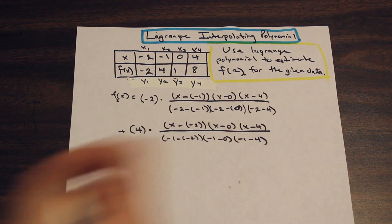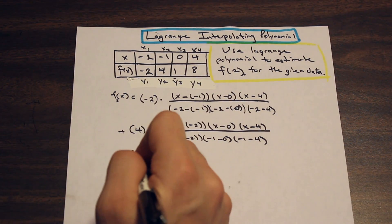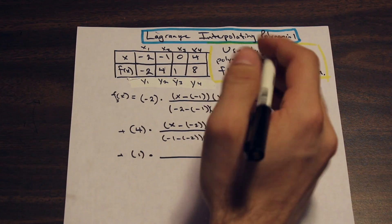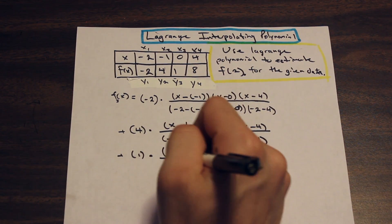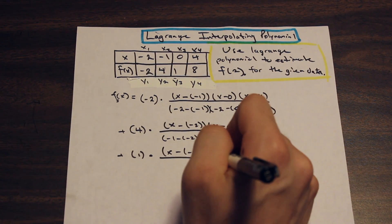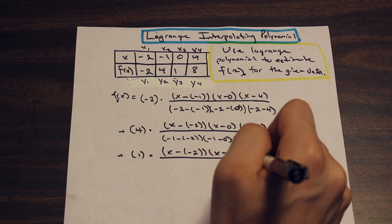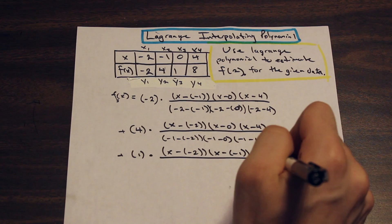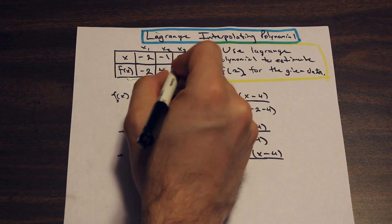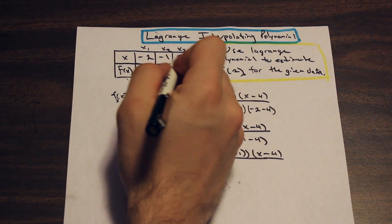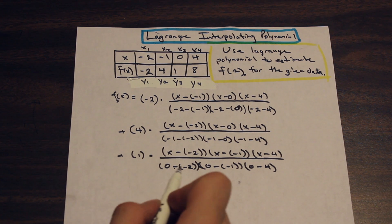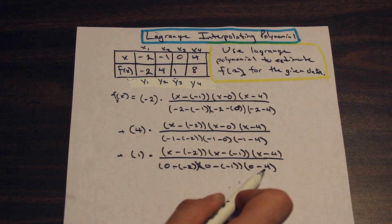Moving on to the y3 term: in the numerator we subtract by all x values that are not x3, so (x − x1)(x − x2)(x − x4). For the denominator, x3 = 0, so we subtract 0 by all x values that are not x3: (0 − x1)(0 − x2)(0 − x4).